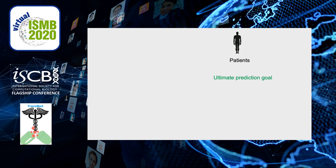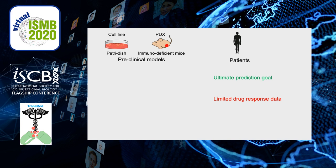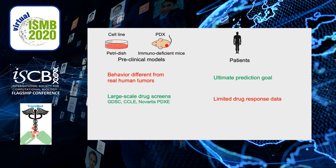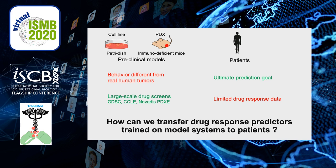In this work, we want to predict drug response in patients. However, we are statistically limited by the amount of drug response data. On the other hand, preclinical models such as cell lines or PDX, even though they show different behaviors from real human tumors, are characterized by large-scale drug screens — a wide range of drugs have been tested — and are more amenable to statistical analysis. So what we want to do is to transfer drug response predictors from these model systems to patients.